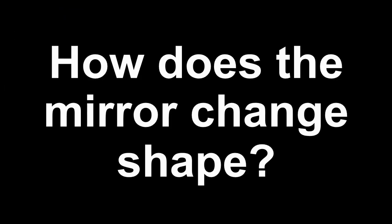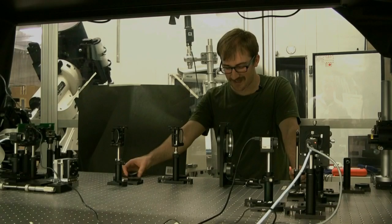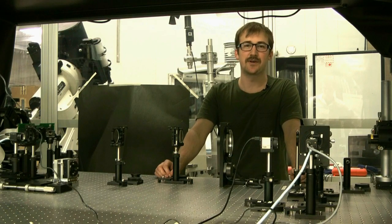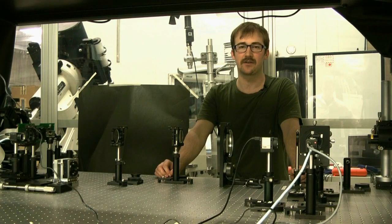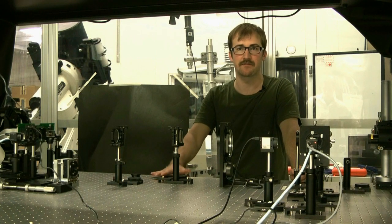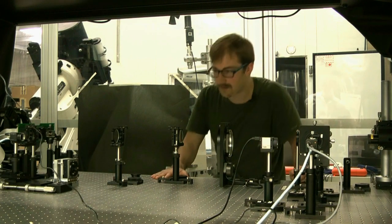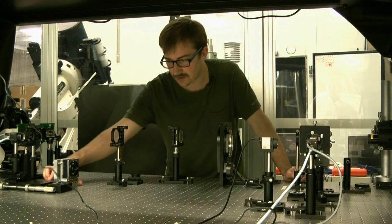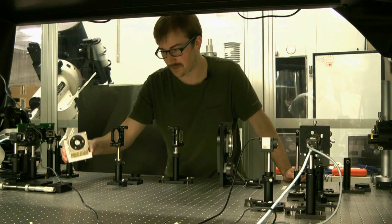And how does the mirror change shape? Are there tiny little motors inside or gremlins or what? Yes, that's a very good question. So there's a bunch of different types of mirrors. In this lab alone, we have three different types of mirrors. One of the mirrors that we use is this one here and they're called deformable mirrors.